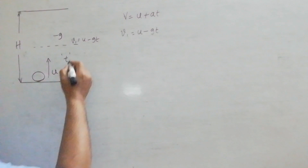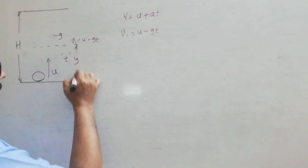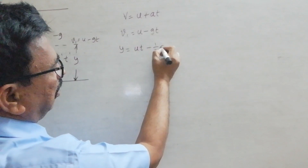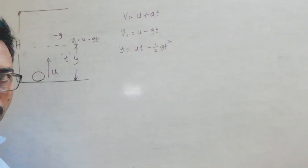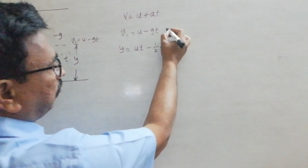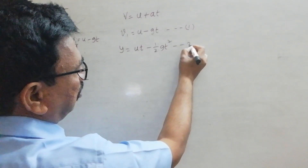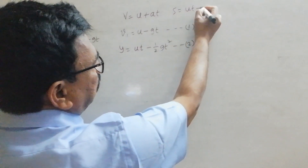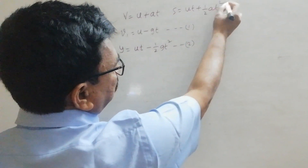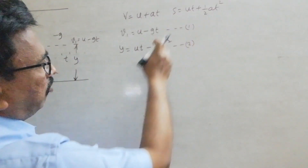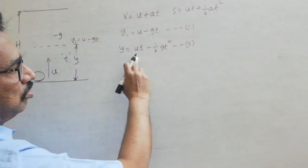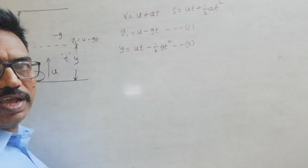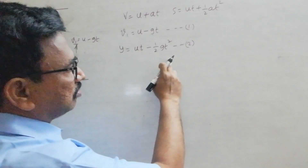The vertical displacement Y is given by Y equal to UT minus half GT squared. This is equation number 2, derived from S equal to UT plus half AT squared where A is equal to minus G. So the vertical displacement after T seconds is UT minus half GT squared.